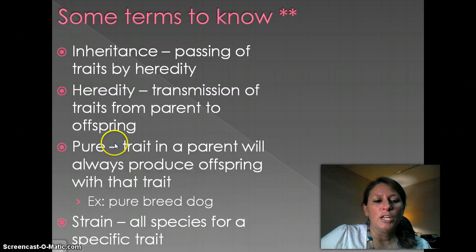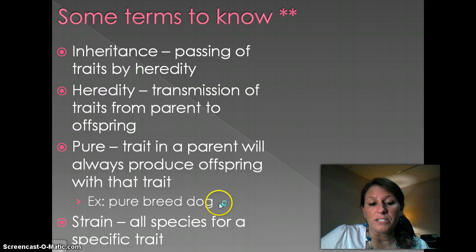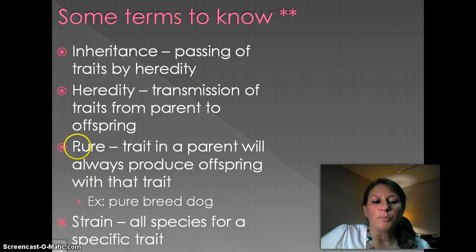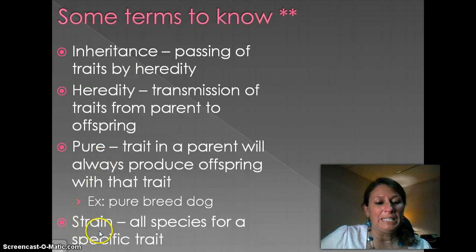We also have the terms pure and strain. If something is pure, a particular trait in a parent will be passed down to the offspring — you've heard of a purebred dog or a purebred horse. Strain refers to the species for a specific trait. A lot of times people will use the word pure when referring to animals and strain when talking about plants.